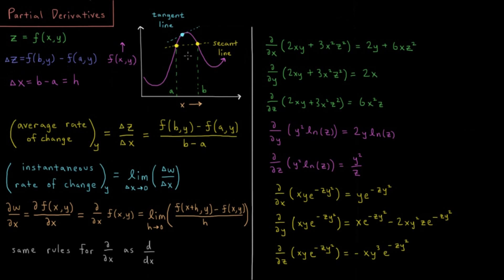If we look here, we see the change of a function between two points. We have x equals a and x equals b, just as we did in the case of a function of one variable, but now we're keeping y constant throughout this entire region.